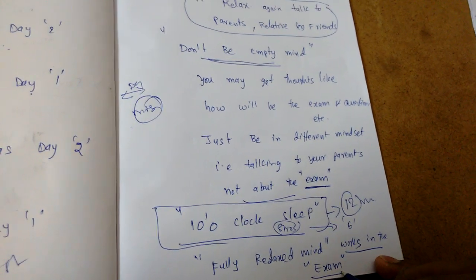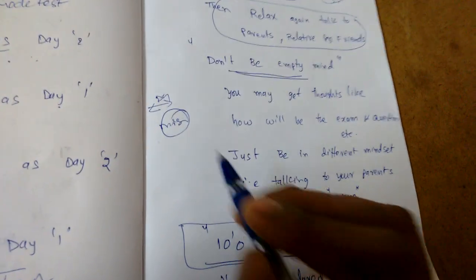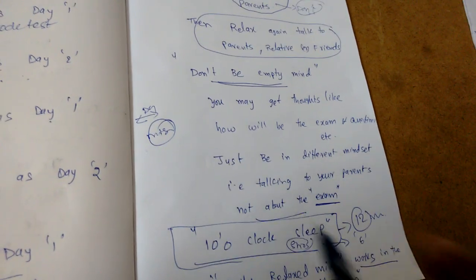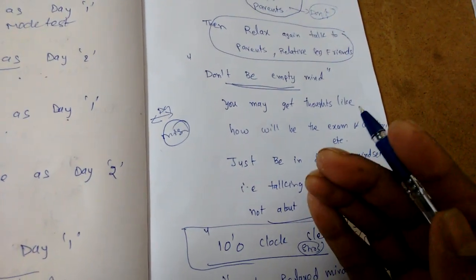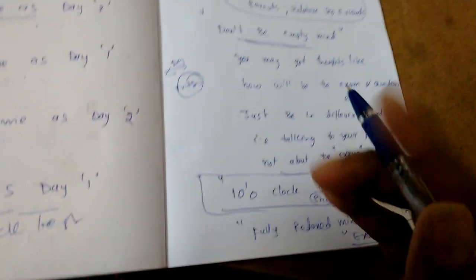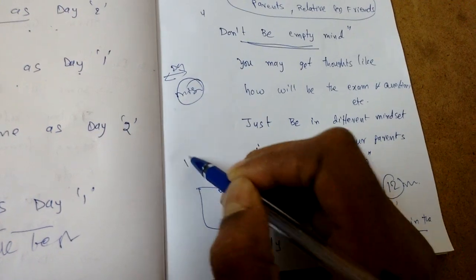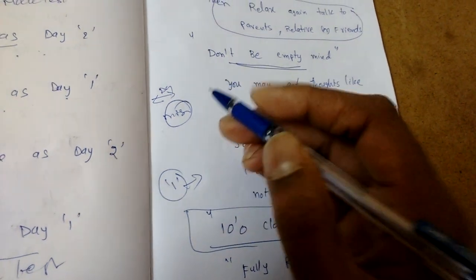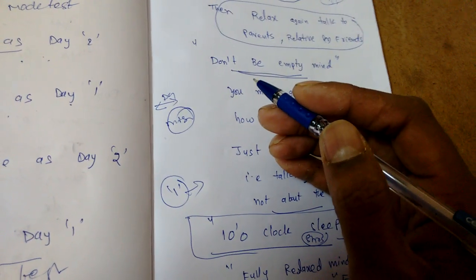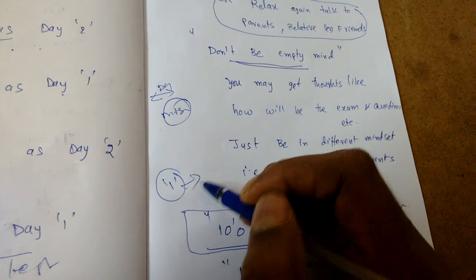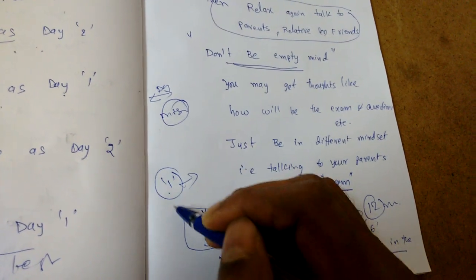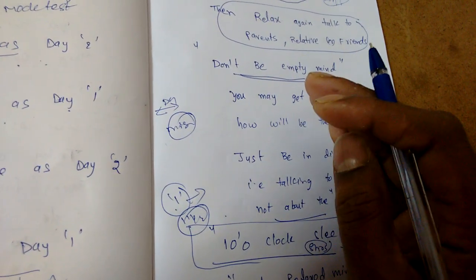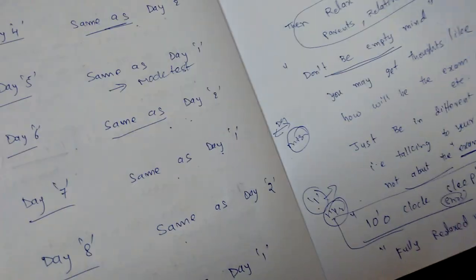On the day of exam, don't see any formulas, don't do any mock test, don't take anything. Just be relaxed and only take your hall ticket. See the exam center and try to go to exam center before maybe one hour. Before one hour or one and a half hour, don't be late. Someone thinks maybe half an hour they ask to come, so we'll go half an hour before - no. Go at least one hour or one and a half hour to the exam center and talk to your friends. If you are hanging, don't be empty minded there also. Don't think about the exam.